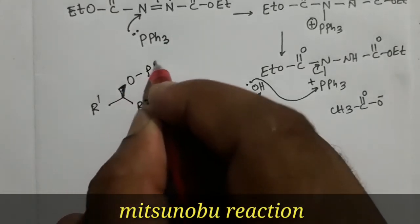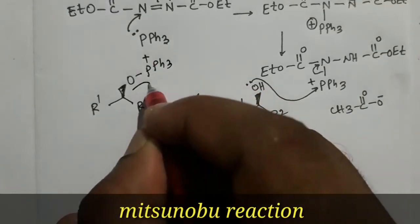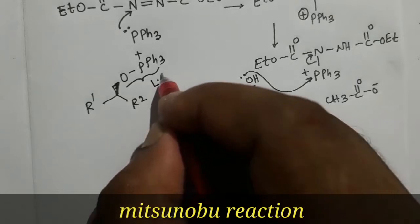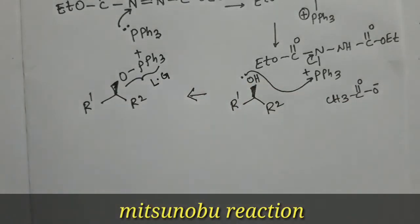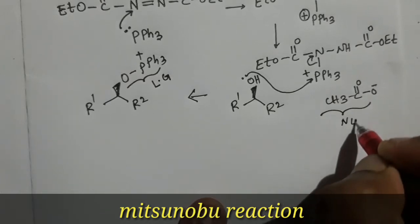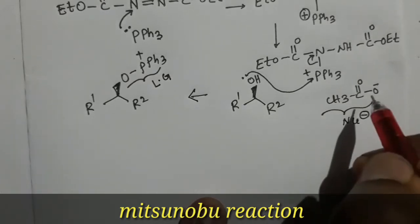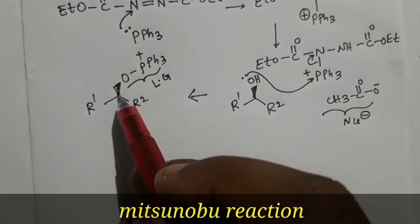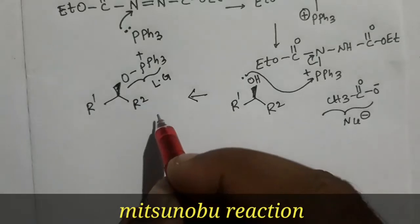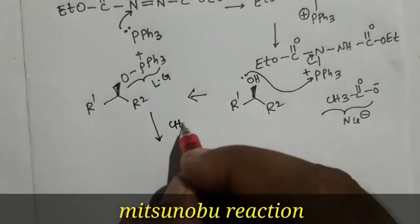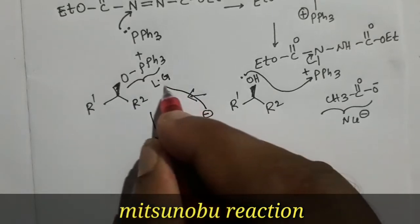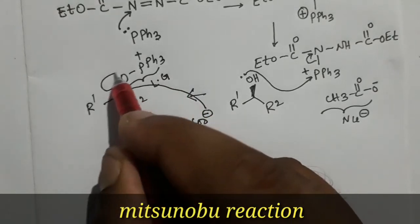The oxygen bonded to phosphorus bears a positive charge, making it a very good leaving group — the leaving group Lg. The acetate anion acts as the nucleophile, NU⁻. This nucleophile will attack the carbon via an SN2 reaction pathway. So the acetate, as nucleophile, will attack this carbon and the leaving group will leave.